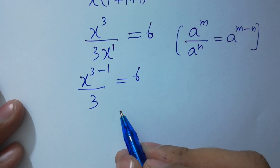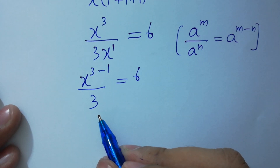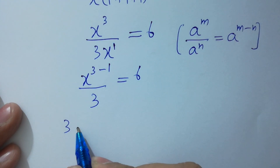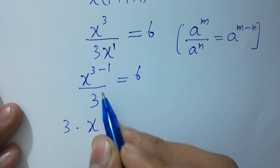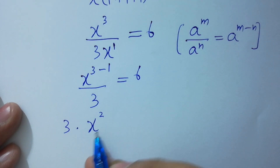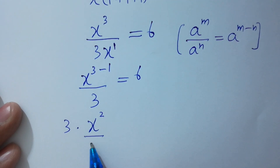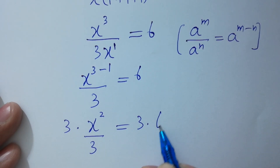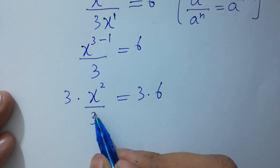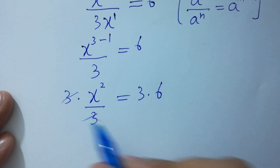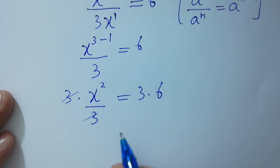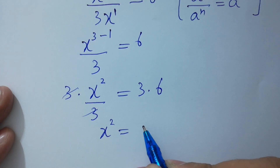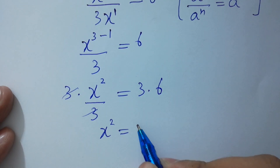Now I am going to multiply by 3 on both sides. 3 times x to the power 3 minus 1, which is 2, over 3 equals 3 times 6. Here, 3 and 3 will be cancelled. We have x squared equal to 6 times 3, which is 18.